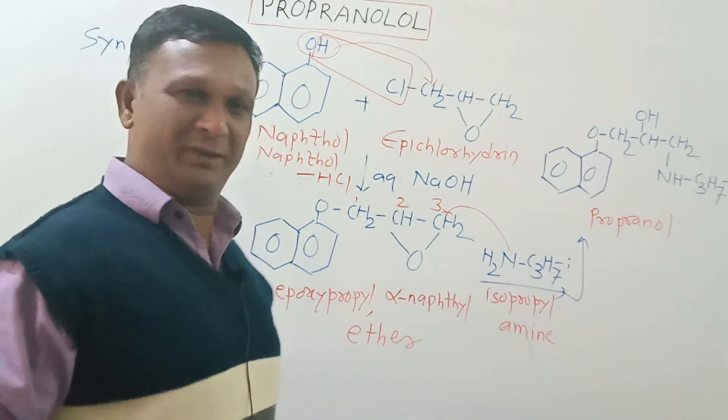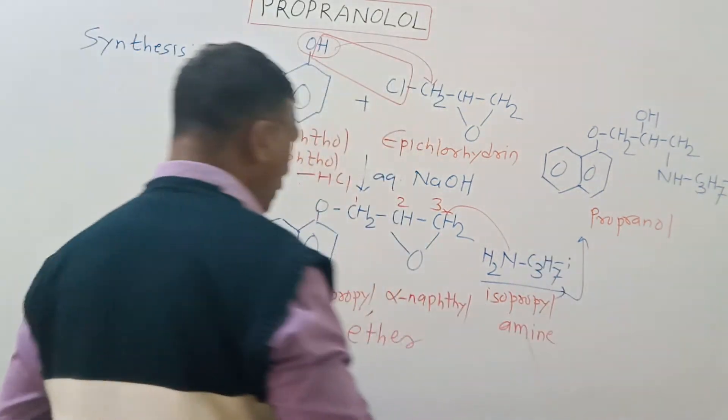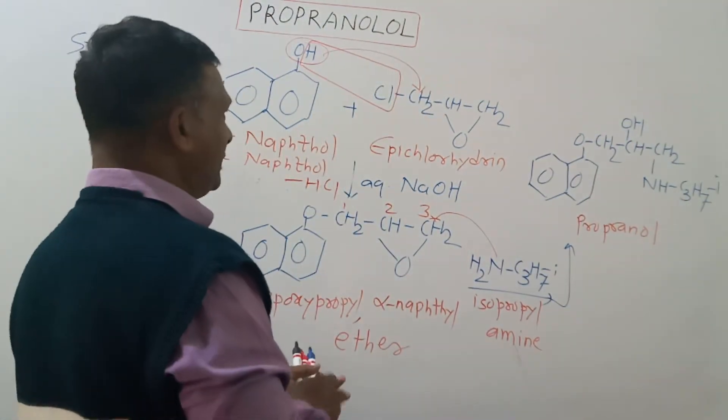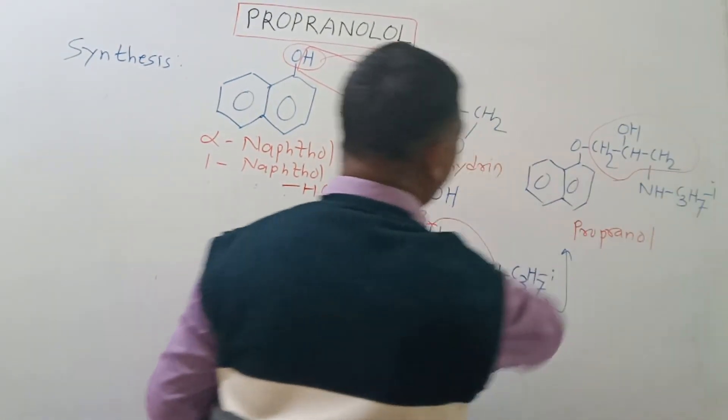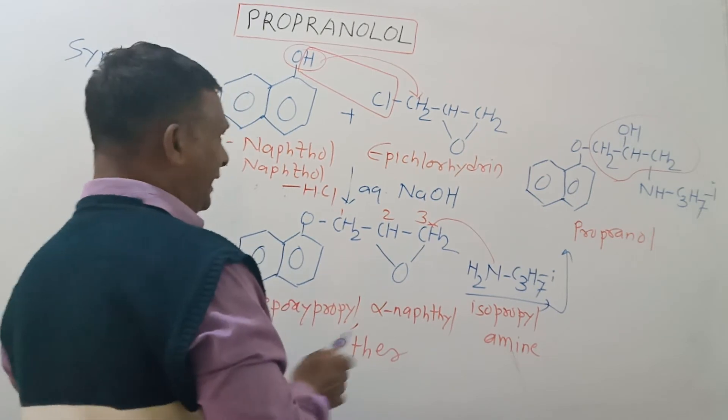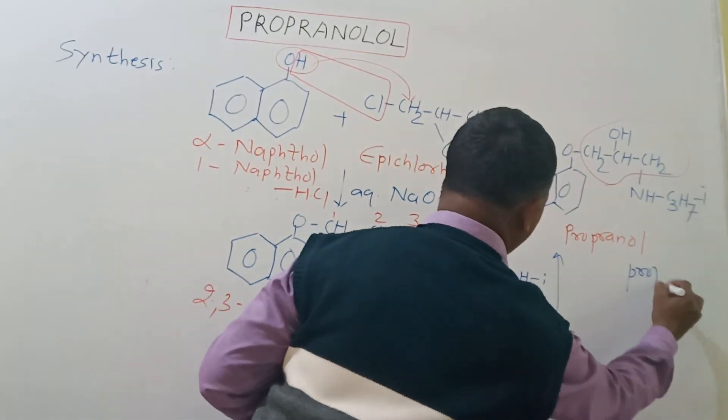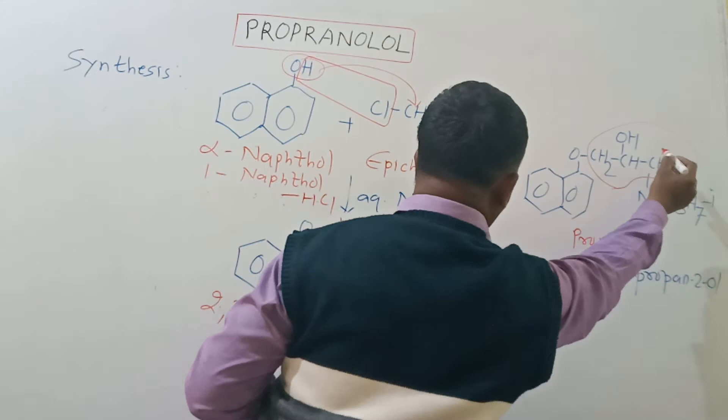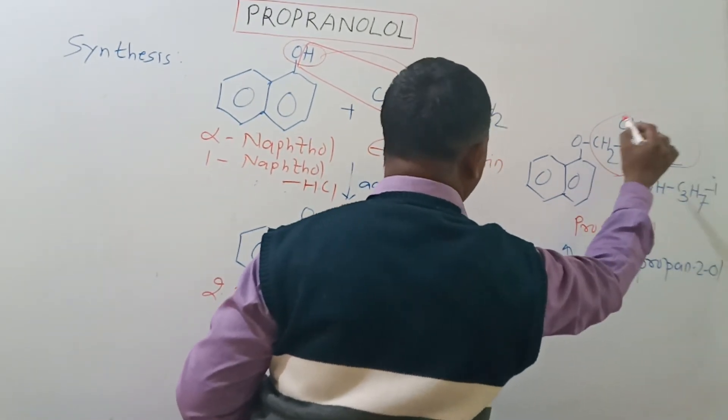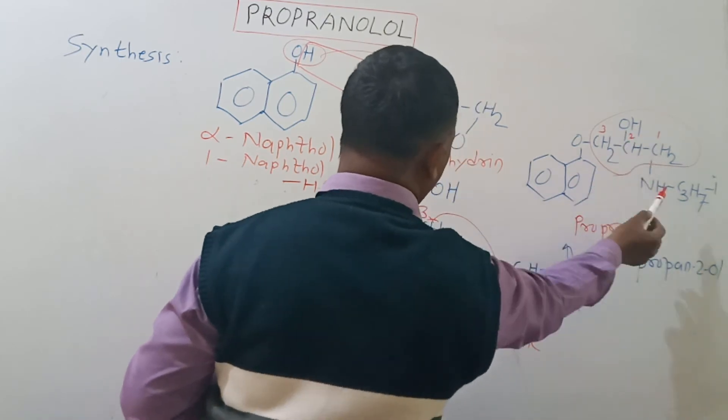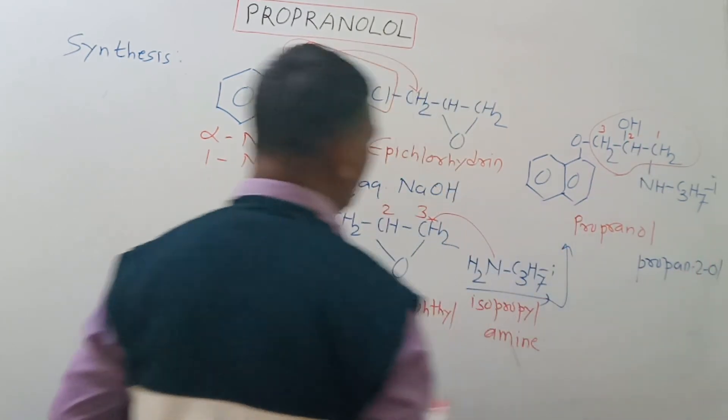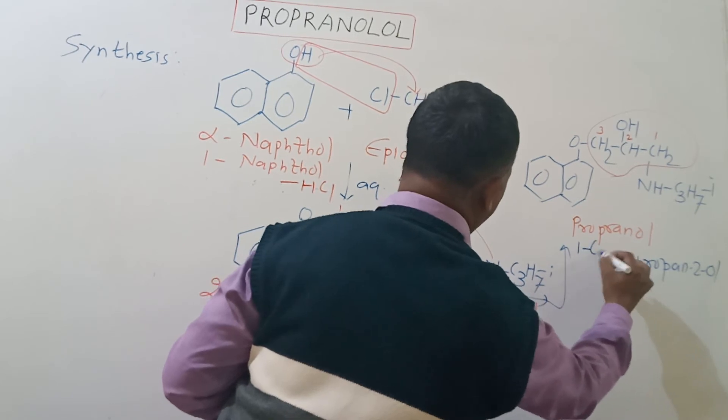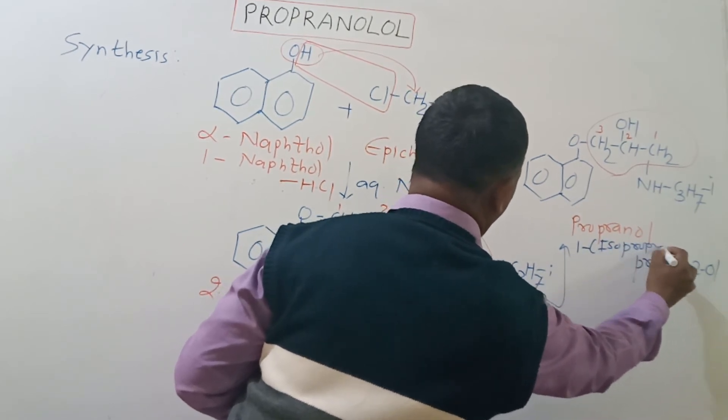Next we go for the IUPAC name of this compound. The propranolol consists of this three-carbon chain attached with the hydroxy group, so the basic moiety present here is propane-2-ol. We will start numbering - this carbon is number one, this will be number two, and this will be number three. The hydroxy group is on carbon number two. On carbon number one there is a substituent which is called isopropylamino.